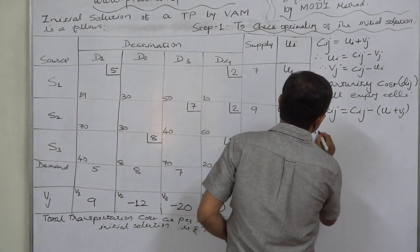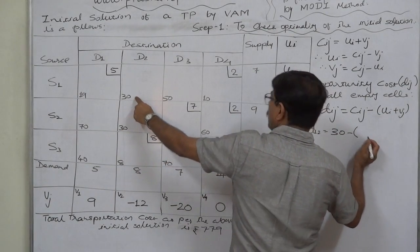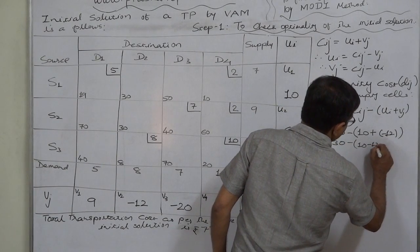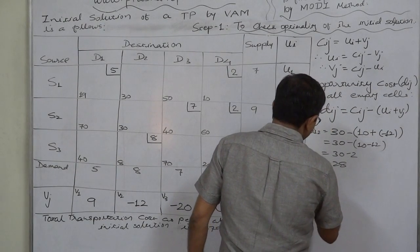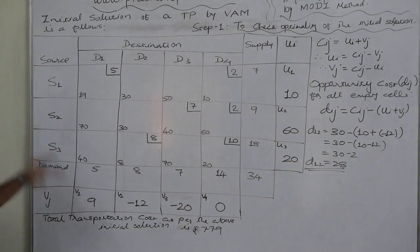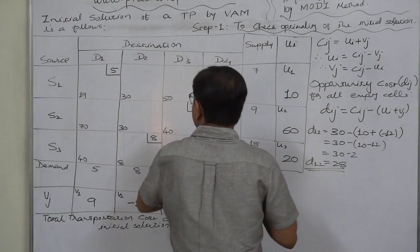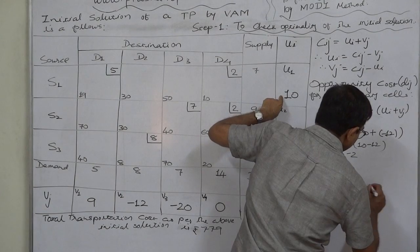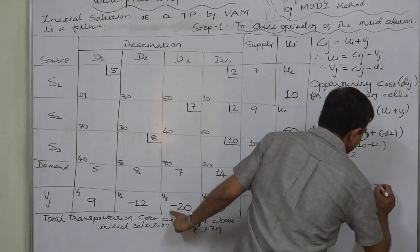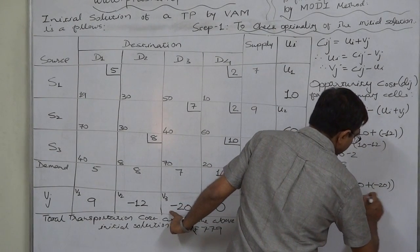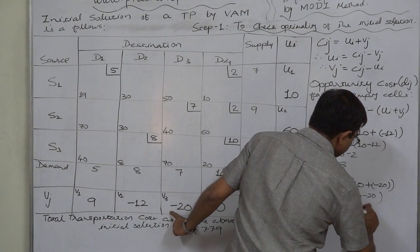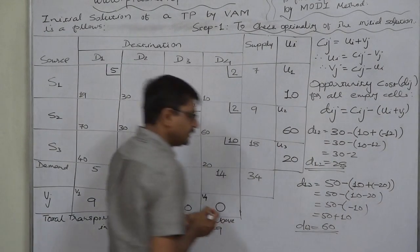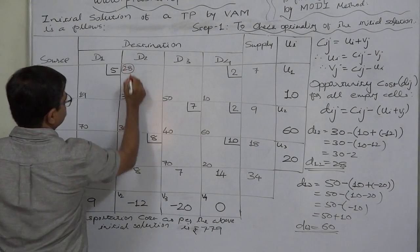Let us calculate all Dij values for the empty cells. D12 = 30 minus (10 plus minus 12) = 30 minus 10 plus 12 = 28, which is positive. D13 = 50 minus (10 plus minus 20) = 50 minus 10 plus 20 = 60, which is positive.